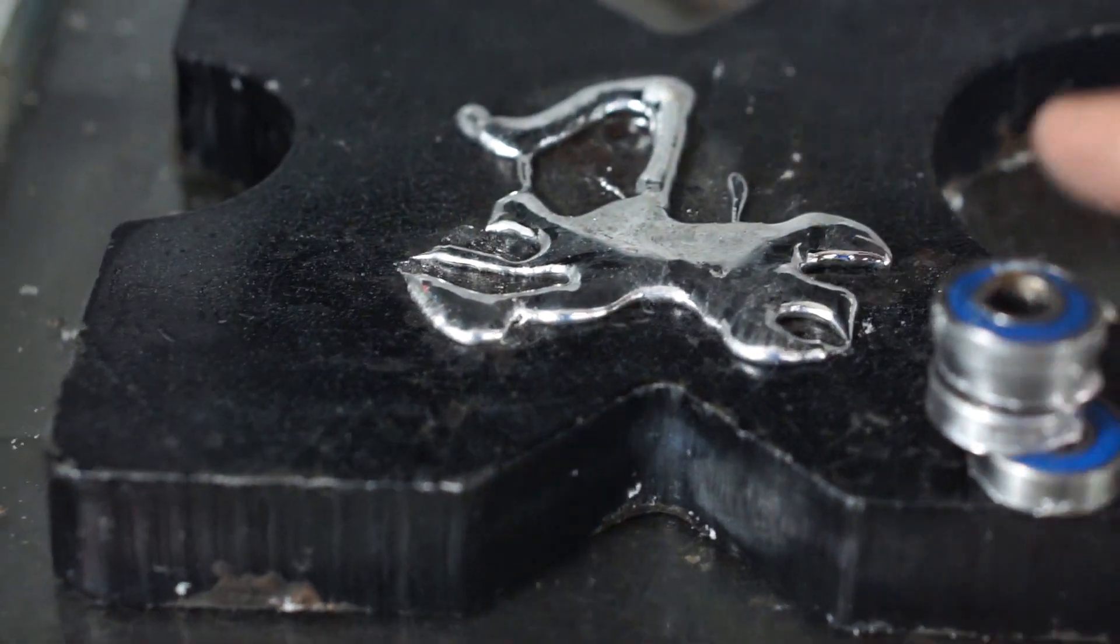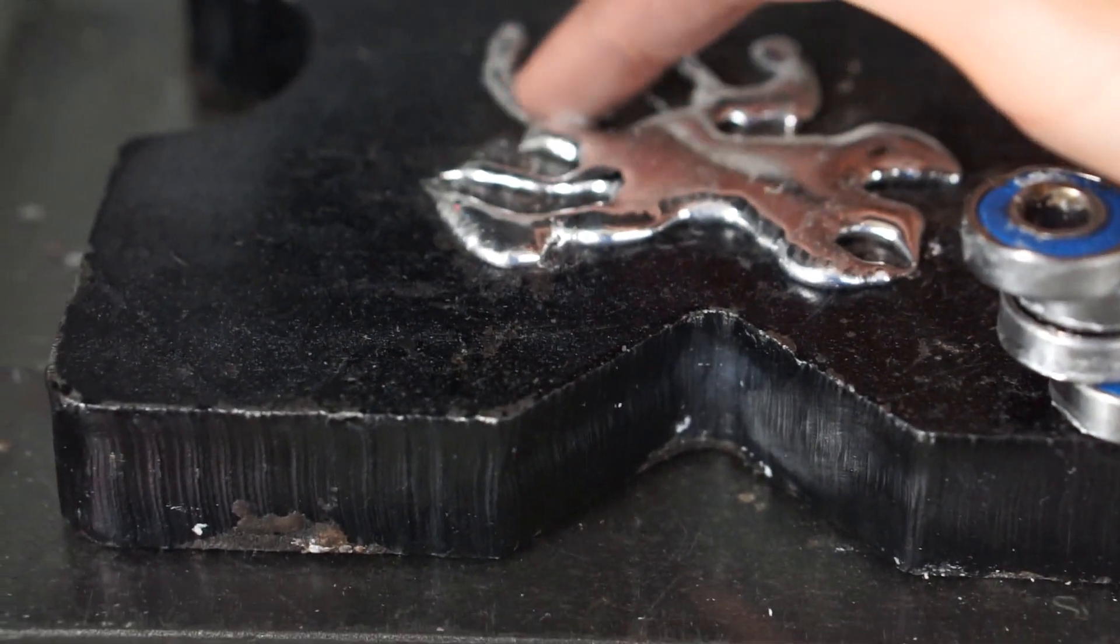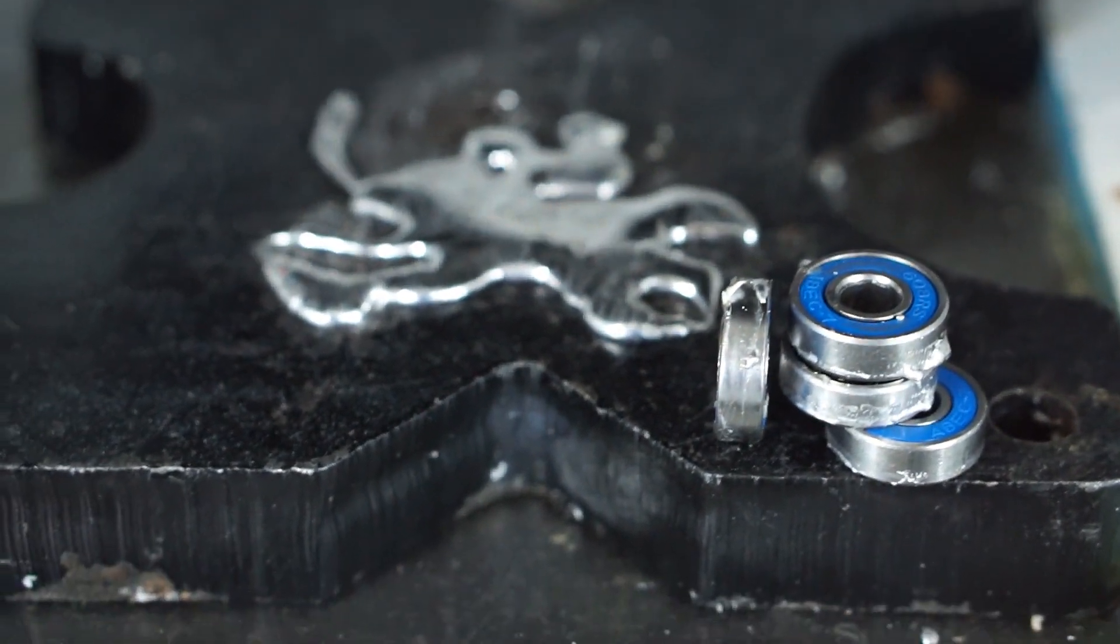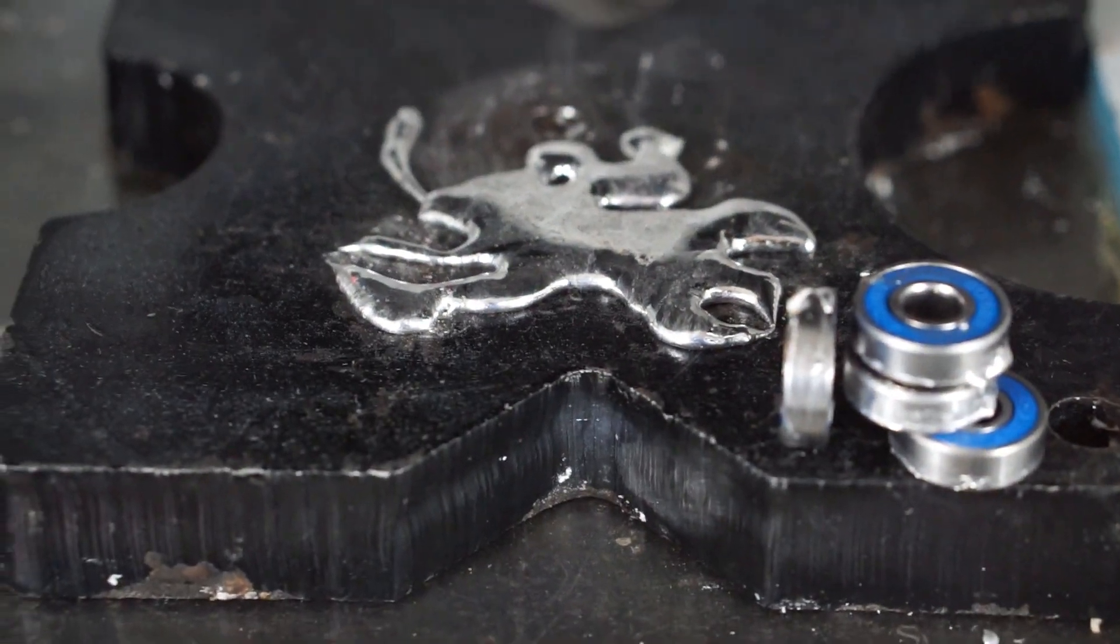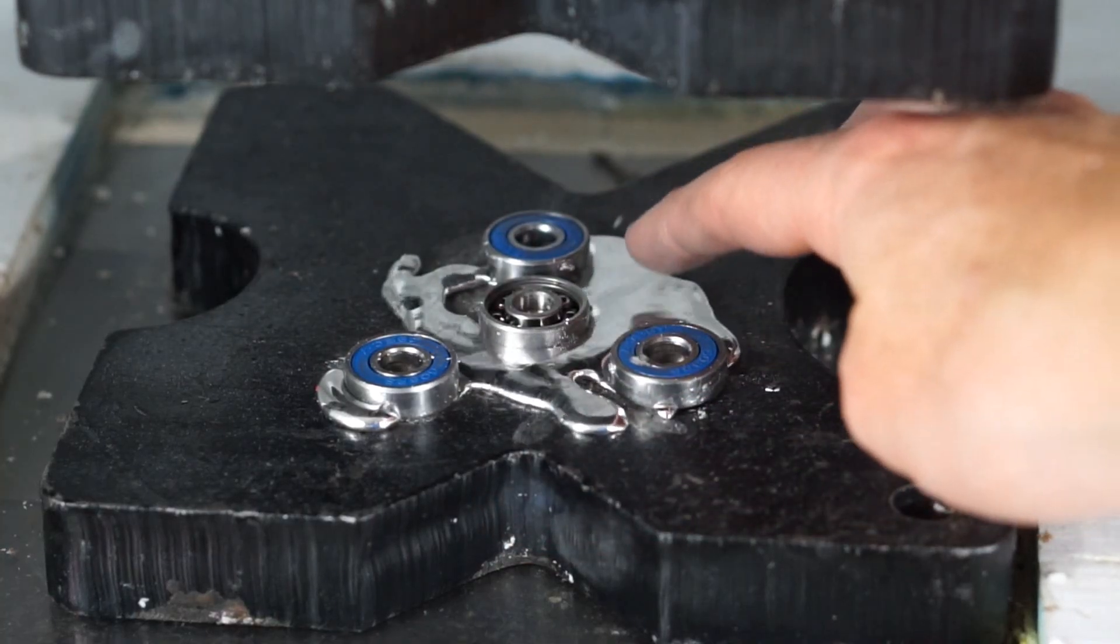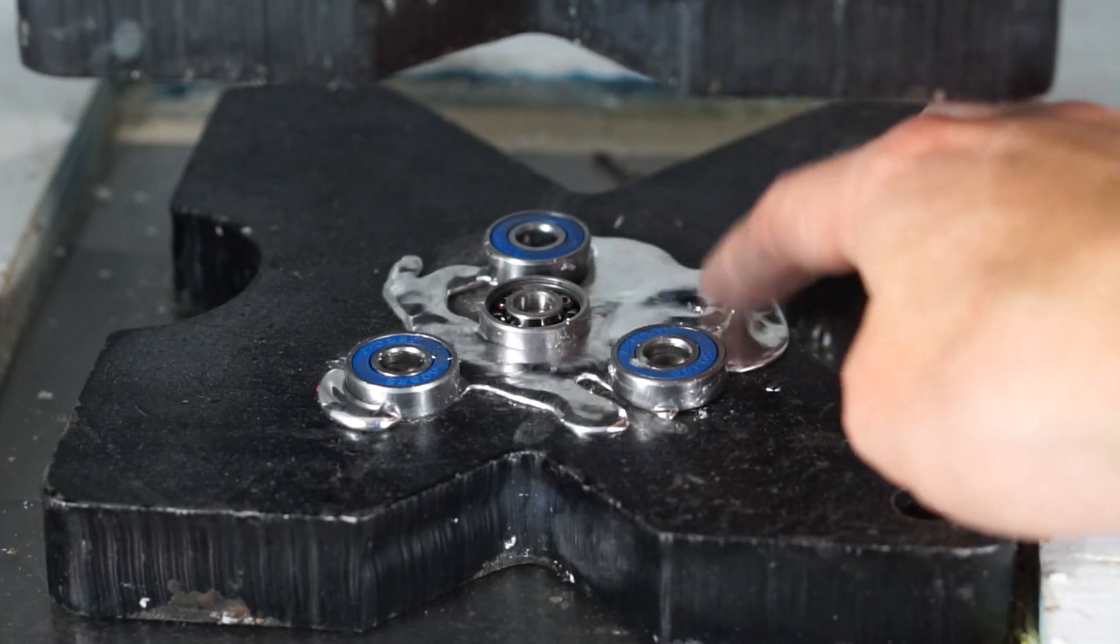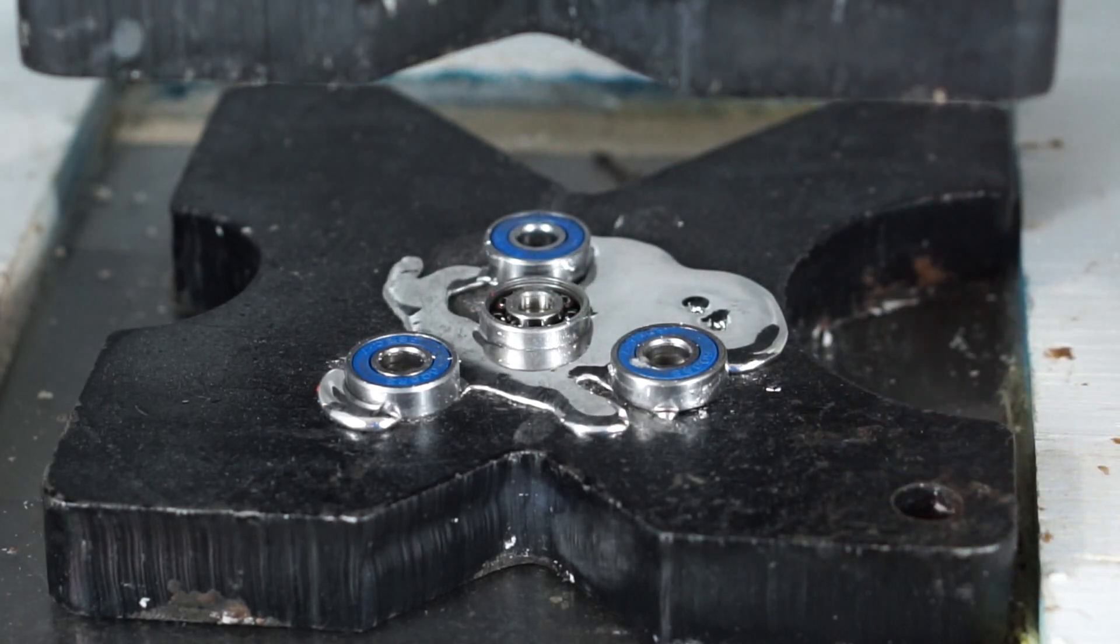So the gallium fidget spinner is no more, has become a terminator liquid again. So our liquid metal fidget spinner is truly a liquid metal again, completely melted in the hydraulic press.